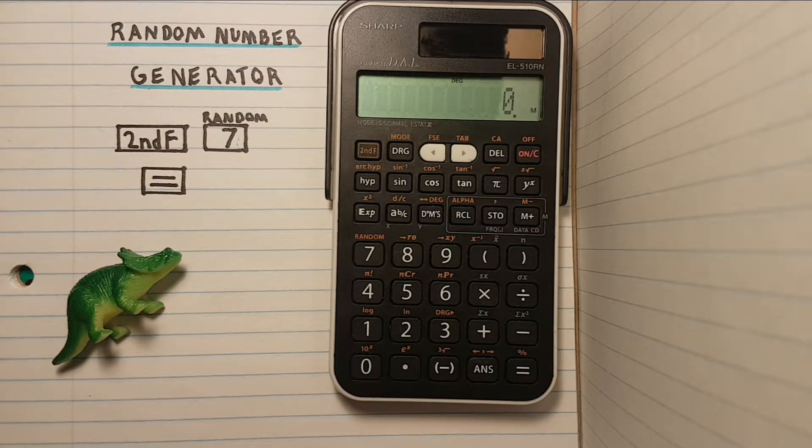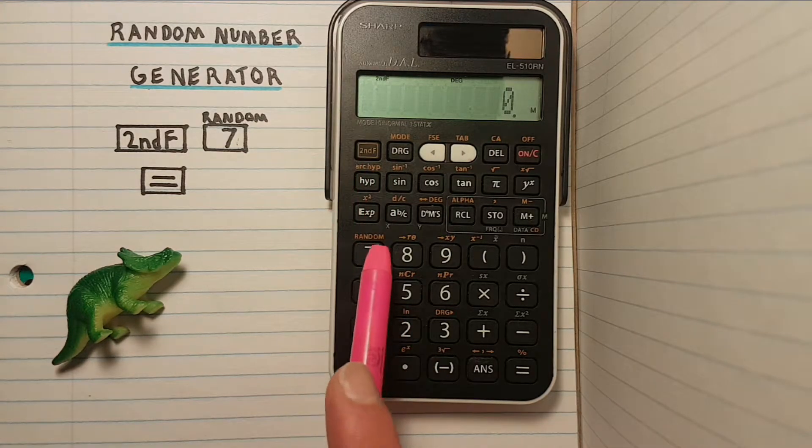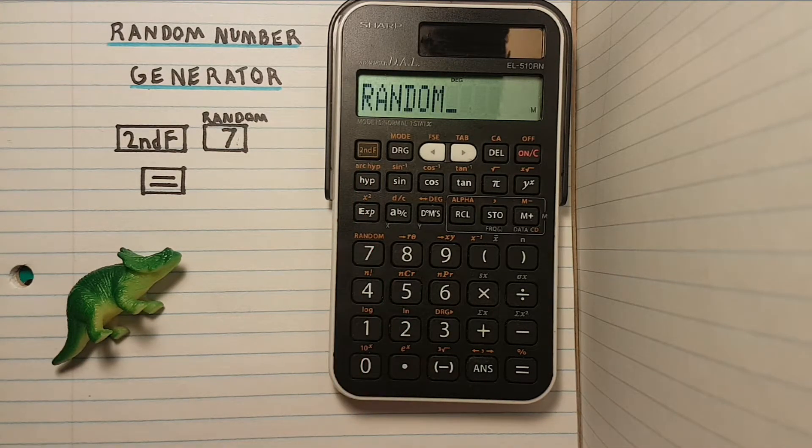When we use this function it generates a random number with three significant figures. To do this we hit the second function followed by the 7 key so that we see the word random on the screen.